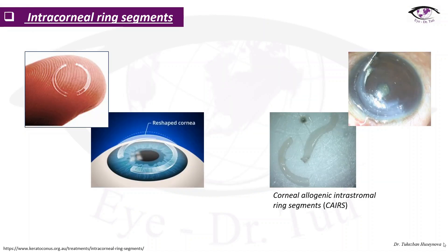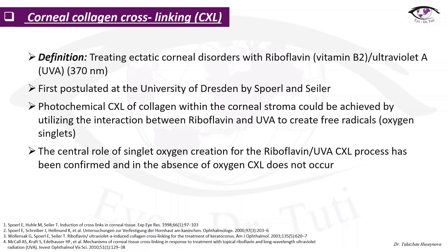The next tool for keratoconus treatment is intracorneal ring segments. There are a few types: those made from PMMA — polymethyl methacrylate — and newly introduced corneal allogenic intrastromal ring segments. Some doctors prefer intrastromal corneal rings and some prefer only cross-linking; this is a decision which the surgeon makes individually.